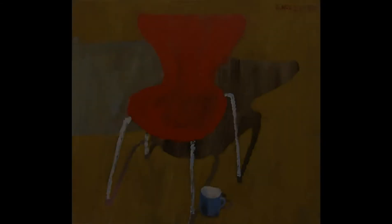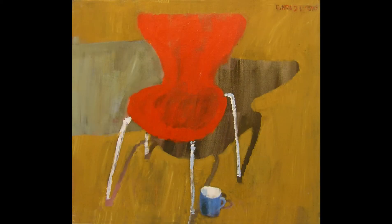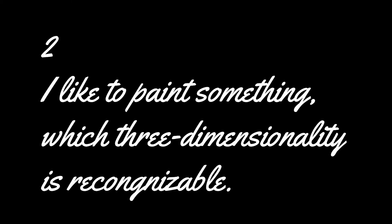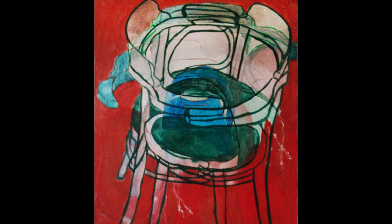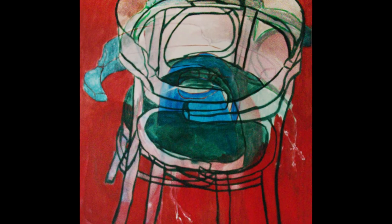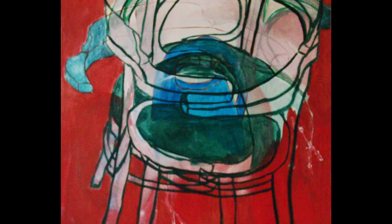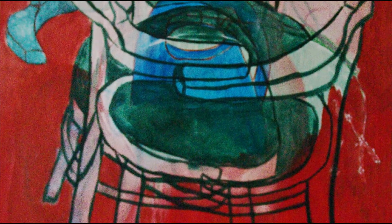The first: I like to paint something which is physically present in the studio. Second: I like to paint something whose three-dimensionality is understandable in the room, in the space — recognisable.